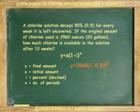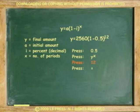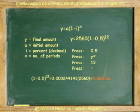Solving for y: y equals 2,560 times 1 minus 0.5 to the 12th power. Because multiplying 0.5 to the 12th power is tedious, we use the y-to-the-x function of the TI-35x calculator. Press 0.5, press y to the x, press 12, press equals. Multiply the answer by 2,560. Y equals 0.625. The amount of available chlorine after 12 weeks is 0.625 ounces, or a little more than a tablespoon.